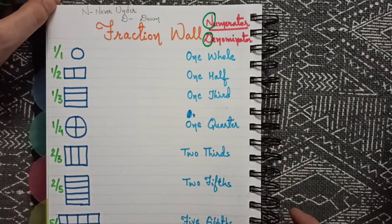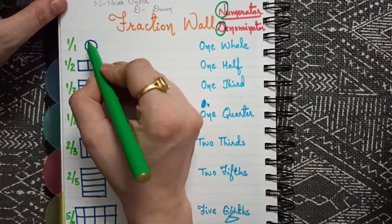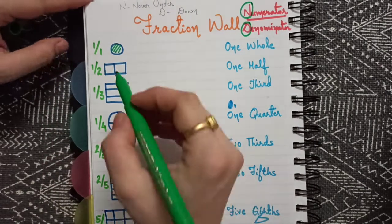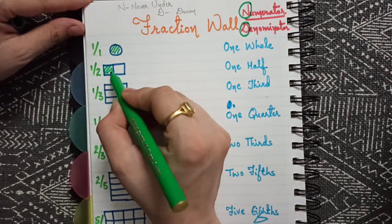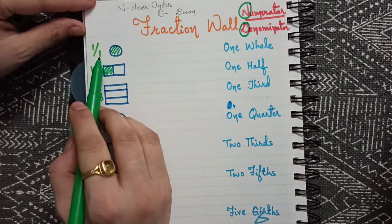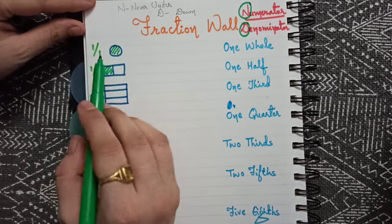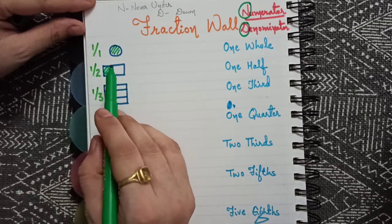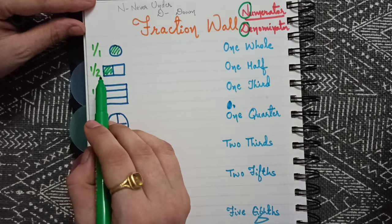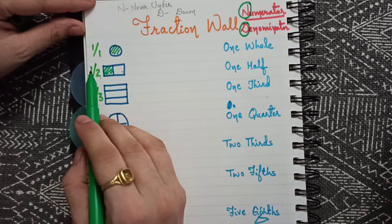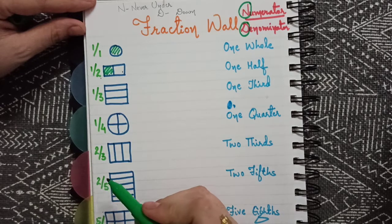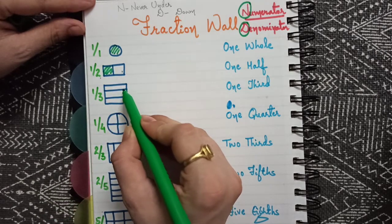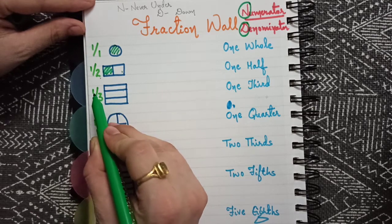Now I'll tell you about the fraction wall. This is one whole — one by one — it means one thing and we took all of it. One by two means one thing was divided into two. So we divided into two, and the numerator one is shown in the shaded area. Now one by three — see here there are three parts, one, two, three — and the numerator is one, so this is one-third.